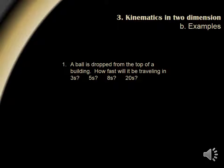Example 1. A ball is dropped from the top of a building. How fast will it be traveling in 3 seconds, 5 seconds, 8 seconds, and 20 seconds? Let's think about the gravitational acceleration of 10 meters per second squared. This means objects travel at 10 meters per second each second. Thus, after 3 seconds, the ball will be traveling 30 meters per second. After 5 seconds, 50 meters per second. After 8 seconds, 80 meters per second. And after 20 seconds, 200 meters per second.